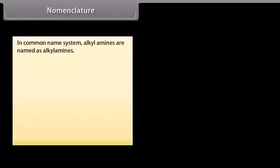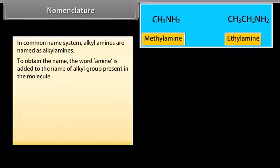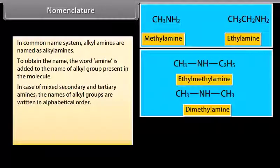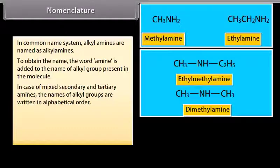In the common name system, alkyl amines are named as alkylamines. To obtain the name, the word 'amine' is added to the name of the alkyl group present in the molecule. In the case of mixed secondary and tertiary amines, the names of alkyl groups are written in alphabetical order.